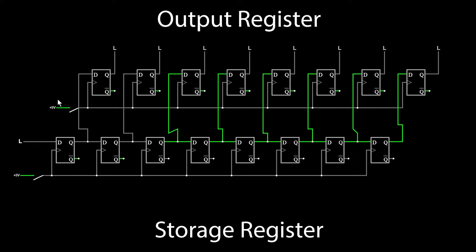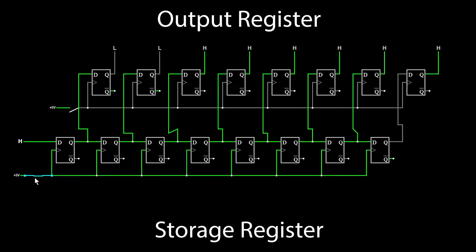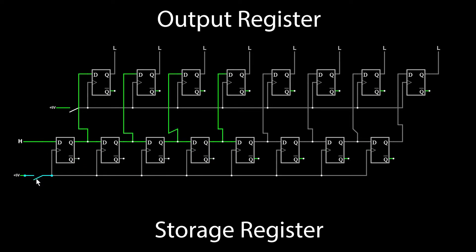This allows you to explicitly decide when you want the shifted result to be displayed. The output register will linger until the next time you pulse the clock. Having separate registers gives you independence between what you're outputting versus what you're shifting — you can shift into the storage register as much as you want, but nothing will display unless you pulse the output register clock.